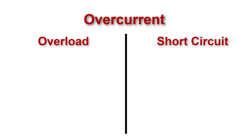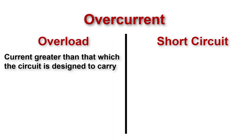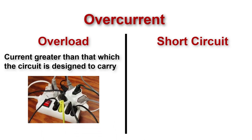We can divide overcurrent term into two important terms: overload and short circuit. Overload is a current greater than the current which the circuit is designed to carry, like when we connect too much loads on an extension cord, or when an induction motor draws more current than the rated current, but it's less than the short-circuit current.